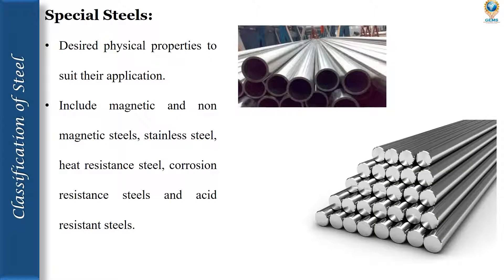Special steels have certain desired physical properties to suit their applications. These include magnetic and non-magnetic steels, stainless steels, heat resistant steels, corrosion resistant steels, and acid steels. These are the classifications of steels based on their usages.